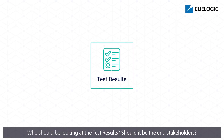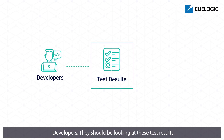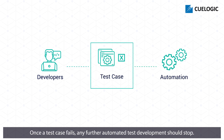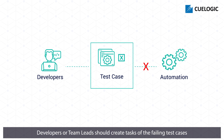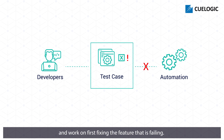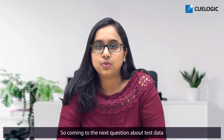Who should be looking at the test results? It should be the developers. Once a test case fails, any further automated test development should stop. Developers or team leads should create tasks for the failing test cases and work on first fixing the feature that is failing.